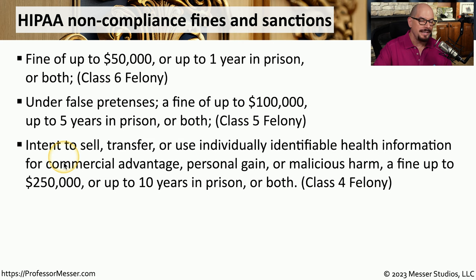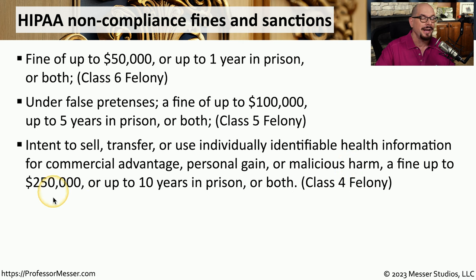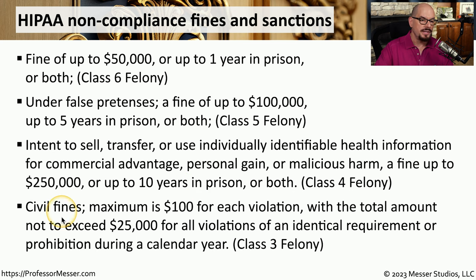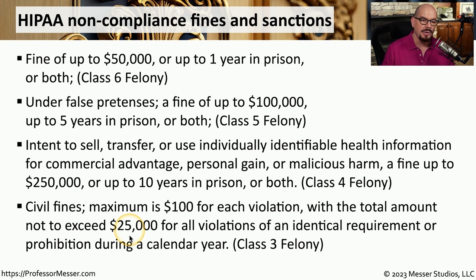If there is an intent to sell, transfer, or use individually identifiable health information for commercial advantage, personal gain, or malicious harm, the fine goes up to $250,000, or up to 10 years in prison. For other civil fines, the maximum would be $100 for each violation, with the total amount not to exceed $25,000 for all violations of an identical requirement. This is a good example of why we spend so much time and money making sure that our organizations are in compliance with everything that's expected of us.